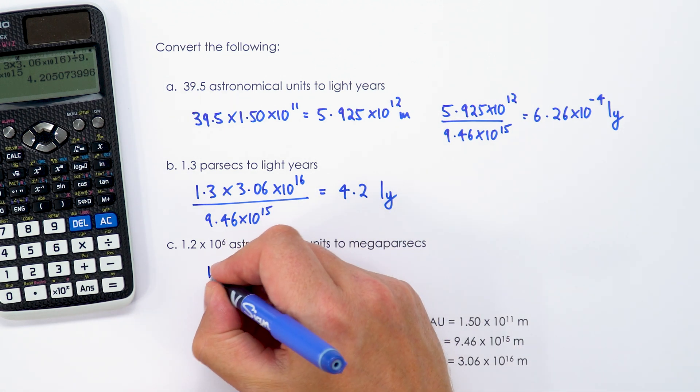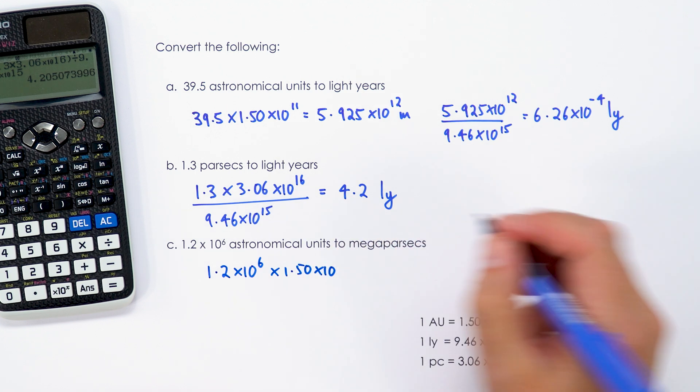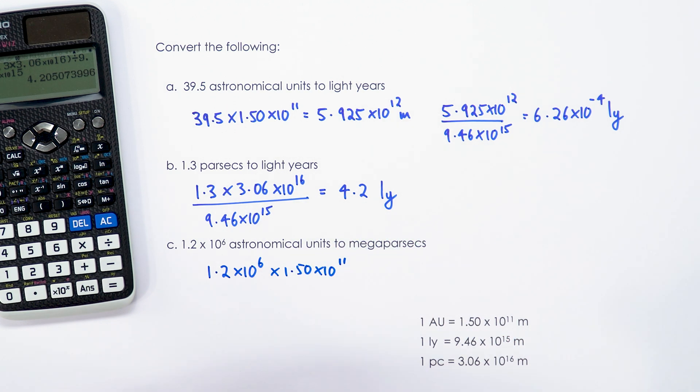So that's going to be 1.2 times 1.50 times 10 to the 11. That's going to convert it into metres. And then we're going to divide by a megaparsec. Now, if a parsec is 3.06 times 10 to the 16, we need to multiply that by another 10 to the 6 to convert it into mega.